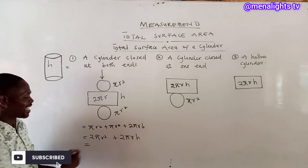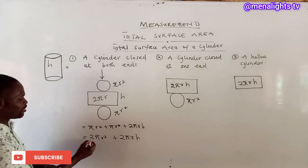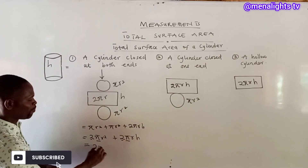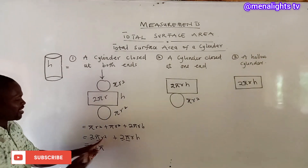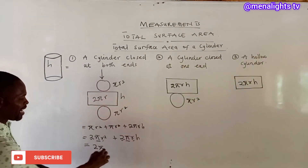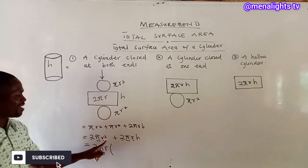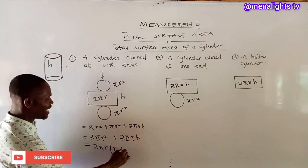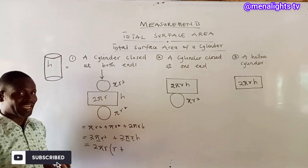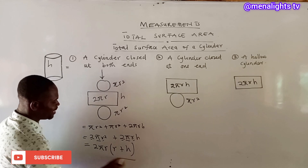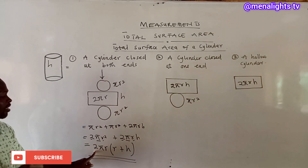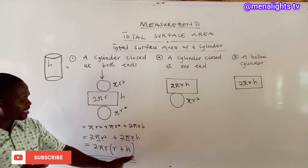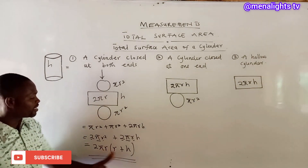We now need to factorize. Looking at this, we have 2 in both terms, so 2 comes out. We have π in both terms, so π comes out. We have r in both terms, so r comes out as well. What remains inside the bracket is r plus h. So the formula for finding the total surface area of a cylinder closed at both ends is 2πr(r + h).